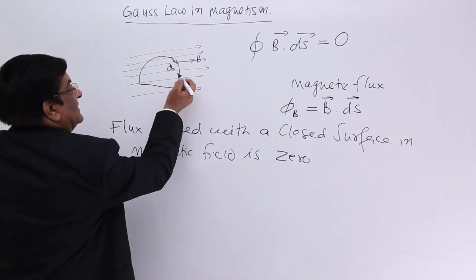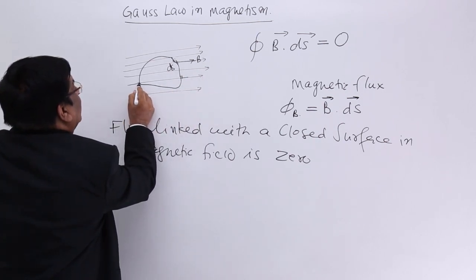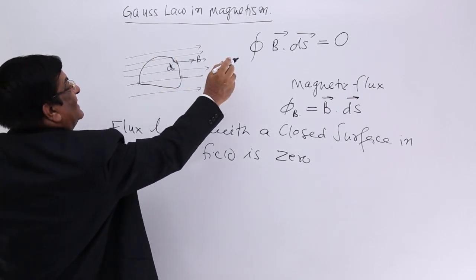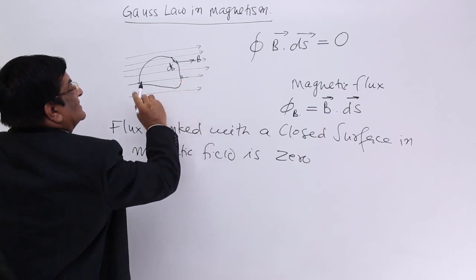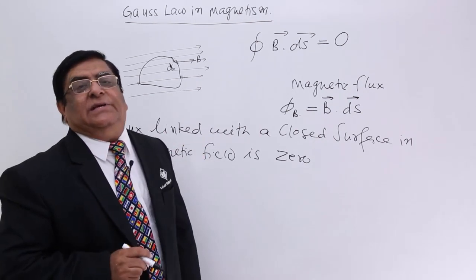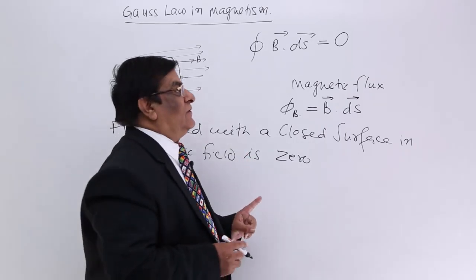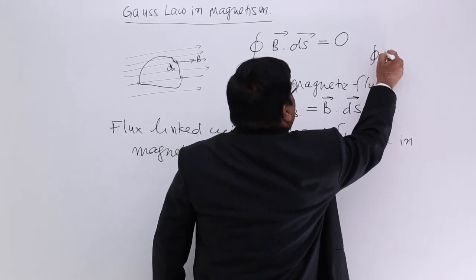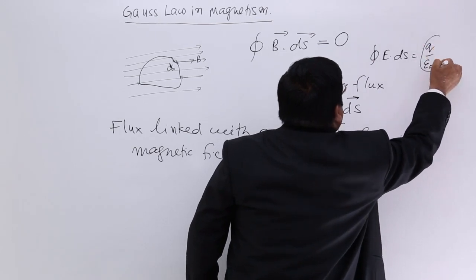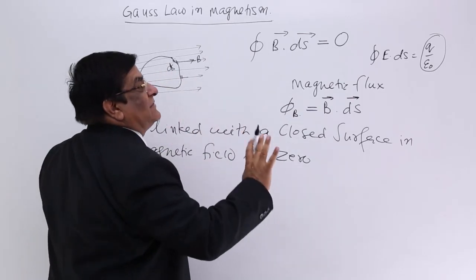Why is it zero? Because the field is going out on one side and going in on the other side. If we make the integration, then the total B·ds is positive at many places and negative at many places, and the sum will be 0. It is always 0. This is very unlike the electrostatic Gauss law, which says that the closed integral of E·ds equals q over epsilon-0 — which depends on how much charge is within the Gaussian surface. But here, it is immaterial.